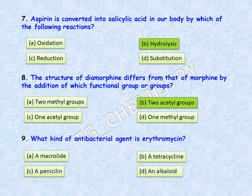Next question: what kind of antibacterial agent is erythromycin? Options are: A, macrolide; B, tetracycline; C, penicillin; D, an alkaloid. The correct answer is option A, macrolide.